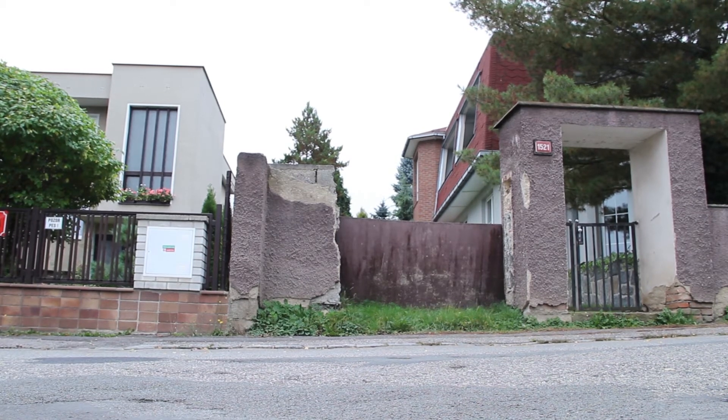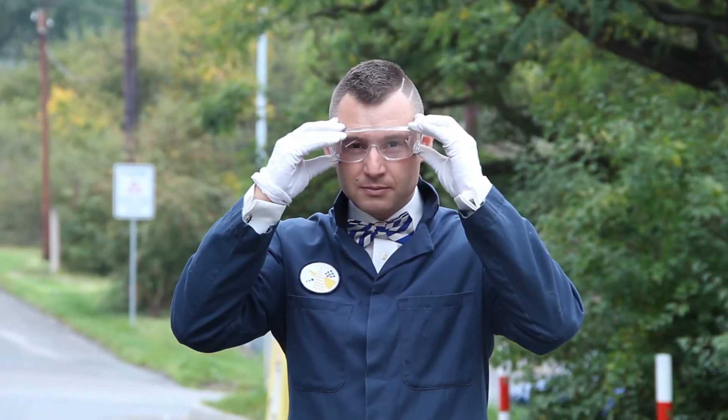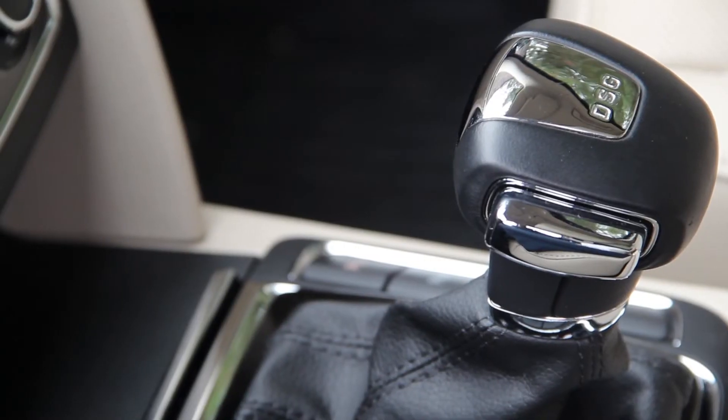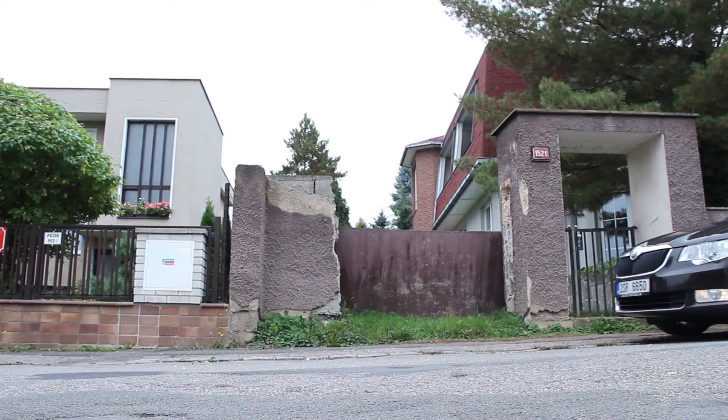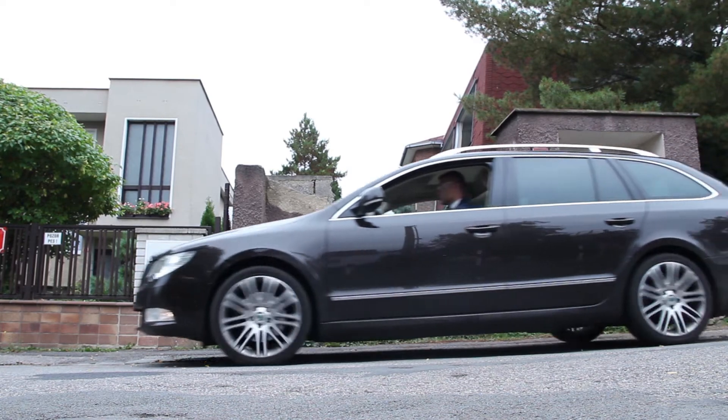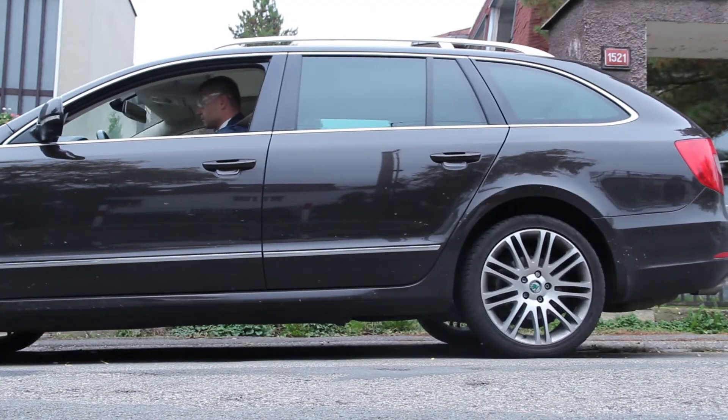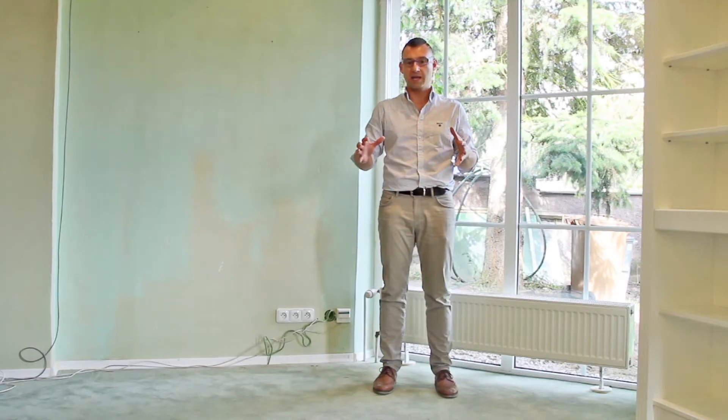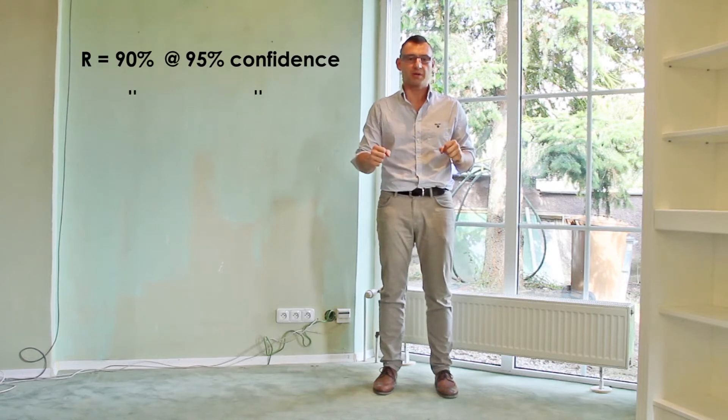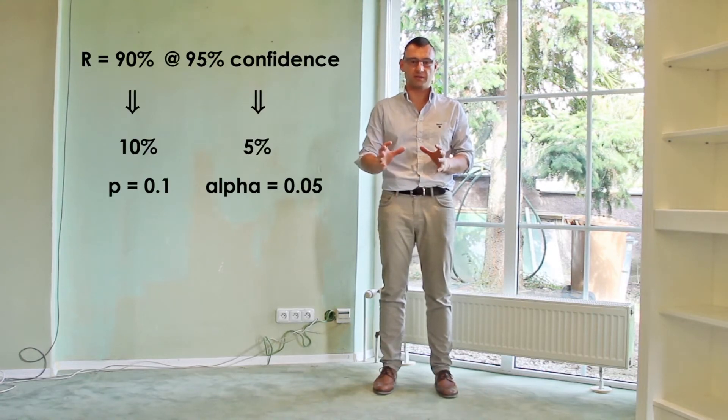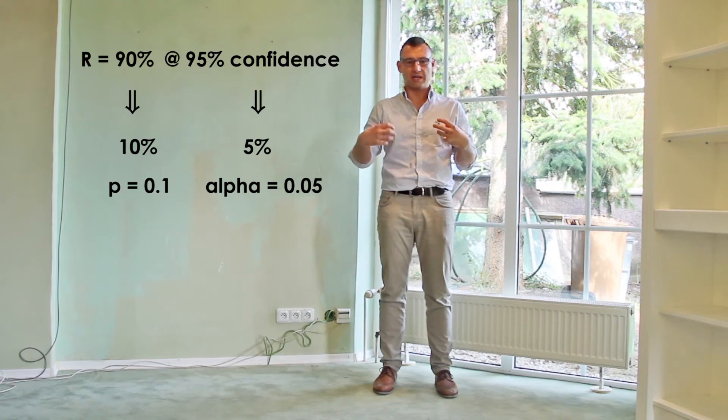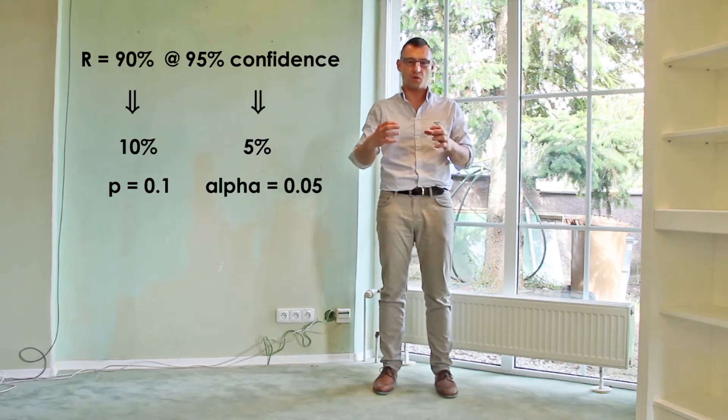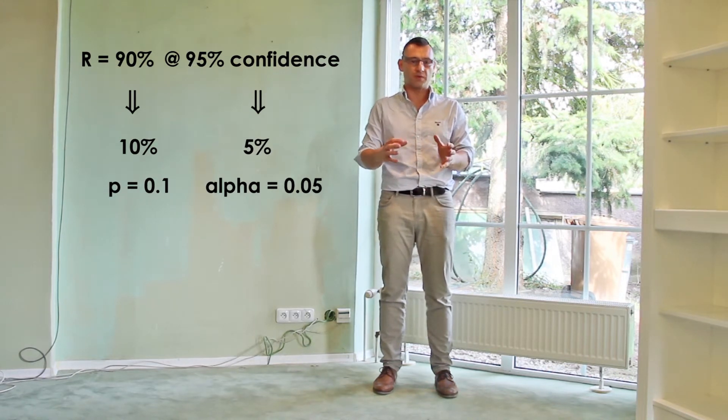But since it is still possible to engage parking mode at low speeds, the components should demonstrate some resistance to these not very frequent cases. This is manifested in an engagement speed test representing a set of events the mechanism is due to withstand in a lifetime. Let's say the required reliability is 90% with a 95% confidence. This means that we shall be 95% confident that at least 90% of all transmissions are capable of surviving the test.